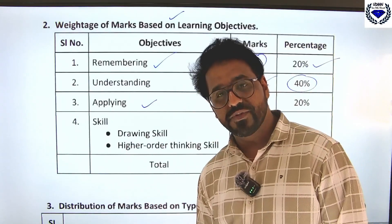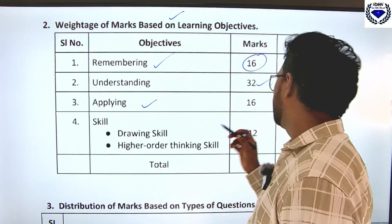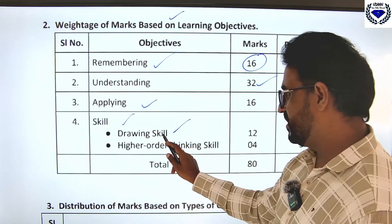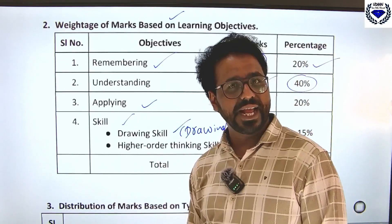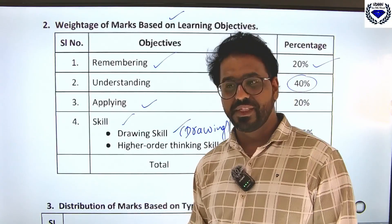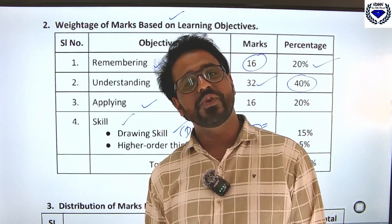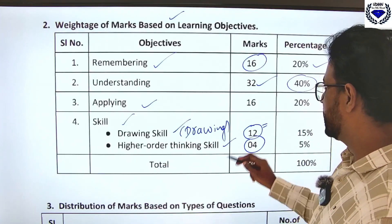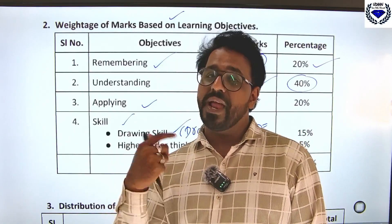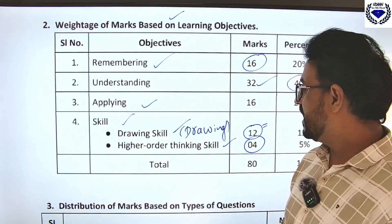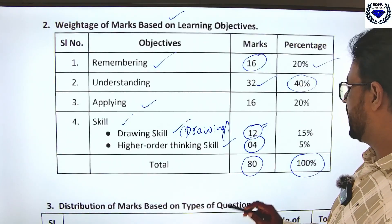Application-based questions like problems will be asked from light and electricity chapters. Skill means drawings — you will be asked to draw figures, and the list of figures has been updated for 2024-25. If you practice all the diagrams provided, you can expect 12 marks from that. Additionally, four marks are for Higher Order Thinking Skills (HOTS) — difficult level questions where you must apply your mind. Total 80 marks.